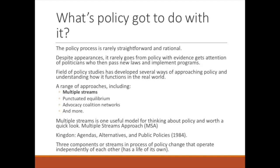Now let's talk about policy. The policy process, despite appearances, is not entirely rational — we need to understand it to connect our evaluation of crime prevention to how it might become a larger program or why certain things don't get off the ground. The field of policy studies has developed several frameworks, including multiple streams, punctuated equilibrium, and advocacy coalition networks. Today we'll briefly look at multiple streams.